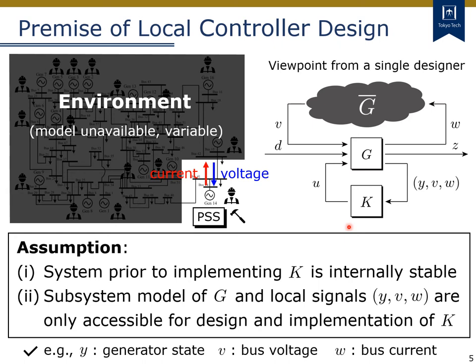For the local controller design, we assume the following. The first item states that the entire system prior to implementing K is internally stable initially. Such an assumption is reasonable in reality because a working system in our lives, such as a power system, is actually operated in a stable manner. So we do not have to stabilize such a working system, but it is important to keep its stability when we add some local controller K.